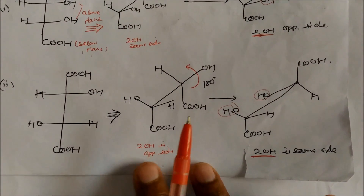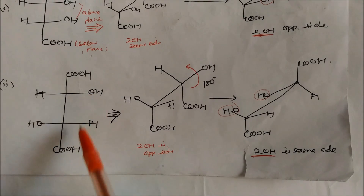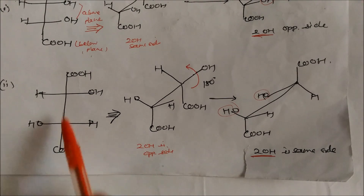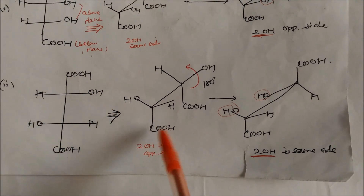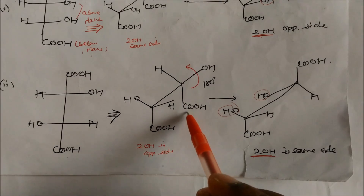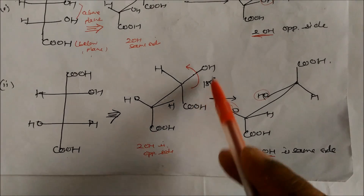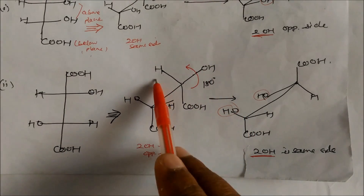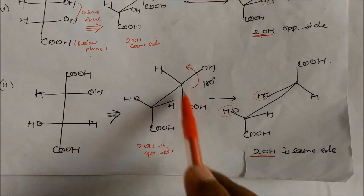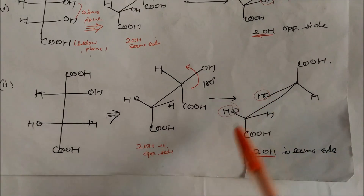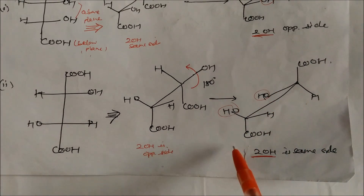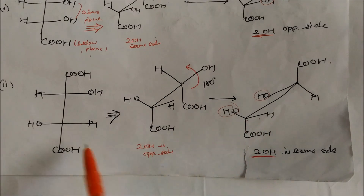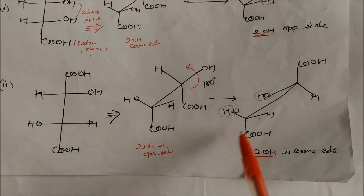For another Fischer projection: draw the two groups in down positions. On doing a 180° rotation, these groups go up, and the OHs move to one side while H goes to the other side in the down position. You again get two OHs on the same side. This is the Sawhorse projection representation of this Fischer formula.